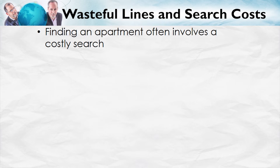Rent controls create wasteful lines and other search costs. Finding an apartment in New York City often takes a long time and a lot of money to get a rent-controlled apartment. In one famous example from Seinfeld, George looks for apartments by consulting the obituaries and rushing to the landlord whenever he sees that someone who died had a nice apartment — and that's in fact one of the techniques New Yorkers use to try to get a rent-controlled apartment.